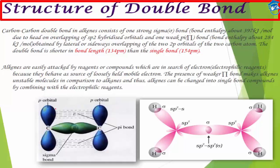Because of this sidewise overlap, it is not as efficient as compared to the head-on overlap. That's why the bond energy or enthalpy of the sigma bond will be higher compared to the pi bond. That's why the sigma bond is stronger than the pi bond.